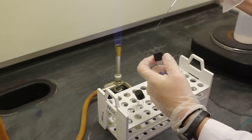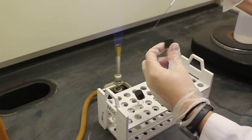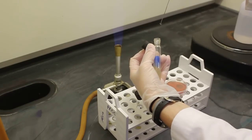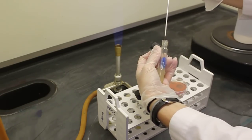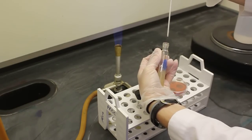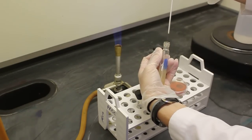I am now going to inoculate the slant. For solid media, you only put the bacteria on the top. I go to the bottom of the slant and just rub the loop onto the slant.